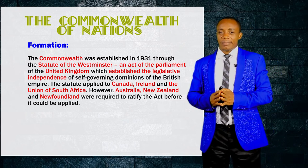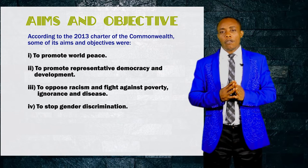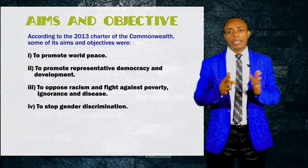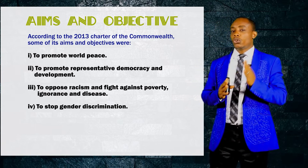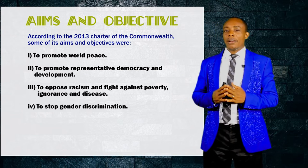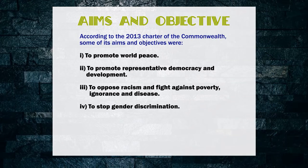Now let's look at the aims and objectives of the Commonwealth of Nations. When it was formally established, the Commonwealth had no constitution or charter, as is the case with several other organizations. It was not until 2013 that the Commonwealth came up with a charter. According to the 2013 Charter of the Commonwealth of Nations, the organization was created with the following objectives: to promote world peace, to promote representative democracy and development, to oppose racism, to fight against poverty, ignorance and diseases, and to stop gender discrimination.